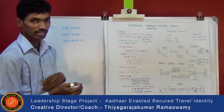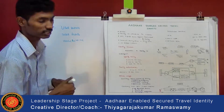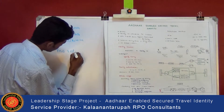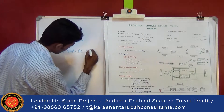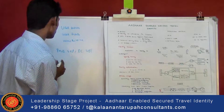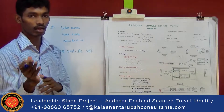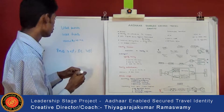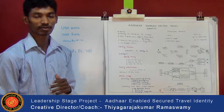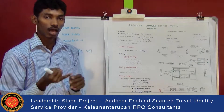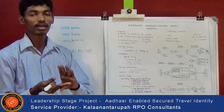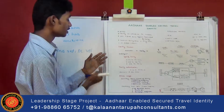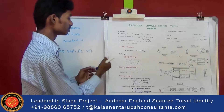What the user has includes proof of identity such as passport, ration card, driving license, and voter ID — all those things are the user's identification proof. The user's biometric information includes iris pattern, fingerprint, face recognition, and voice recognition. These are all the identity types in identity creation.